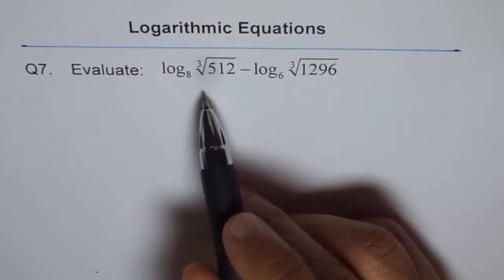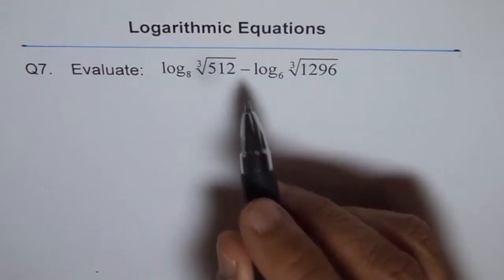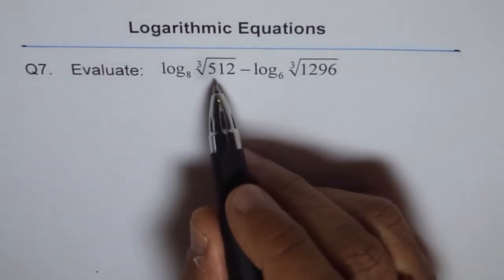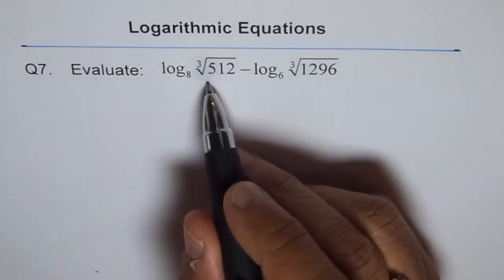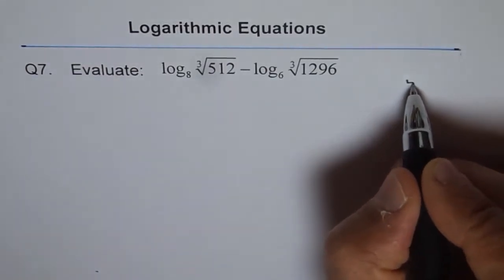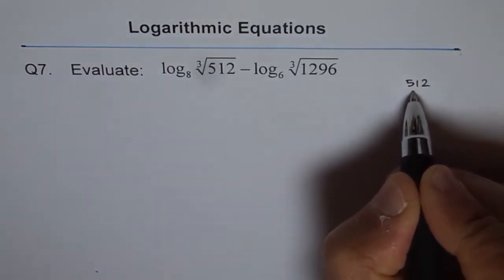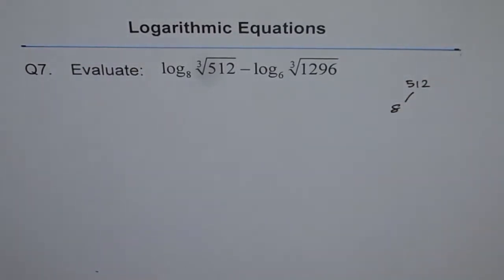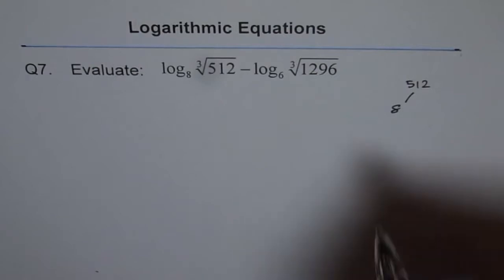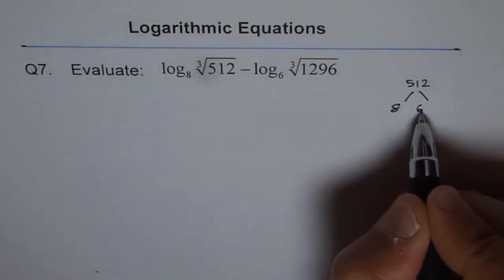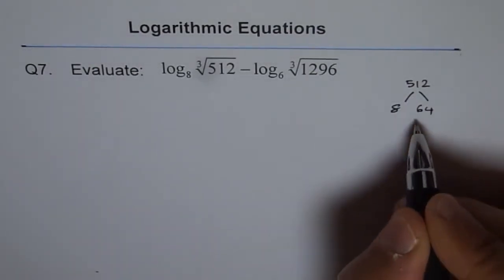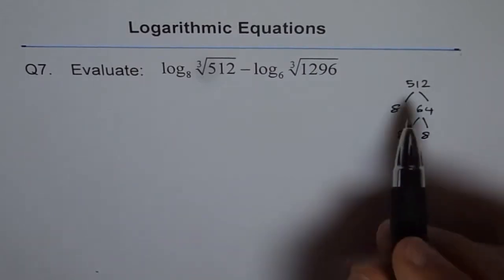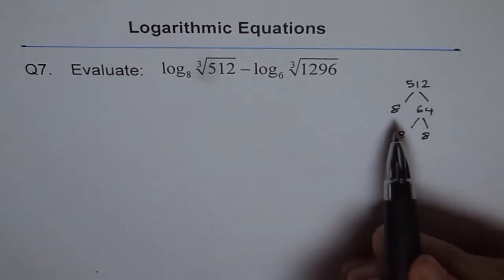Let's use a calculator and factorize it. If I divide 512 by 8, I get 64. Now 64 can also be divided by 8; it's 8 times 8. Therefore, I can write 512 as 8 to the power of 3. That is the simplification of 512.